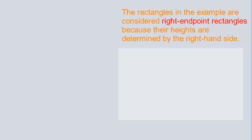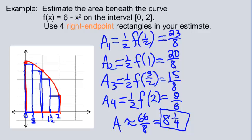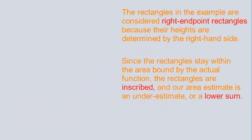The rectangles in this example are right endpoint rectangles because their heights are determined at the right-hand side. The rectangles stay within the area bound by the actual function, so these rectangles are inscribed as opposed to circumscribed. Our area estimate is an underestimate, or a lower sum, because there is excess space between our approximating rectangles and the actual boundary of the region — gaps that aren't accounted for in our rectangle areas.